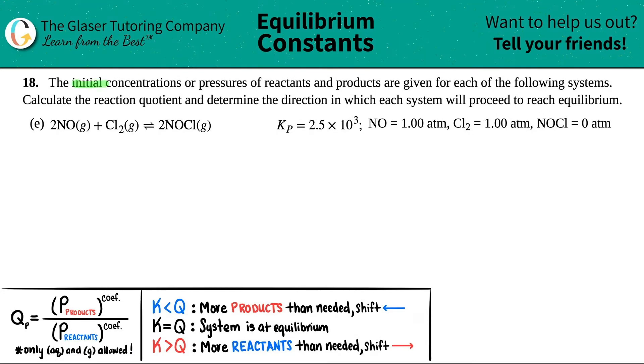Number 18, the initial concentrations or pressures of reactants and products are given for each of the following systems. Then we have to calculate the reaction quotient and determine the direction in which each system will proceed to reach equilibrium.